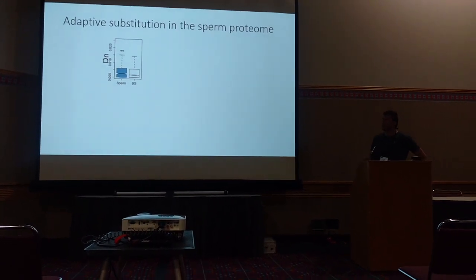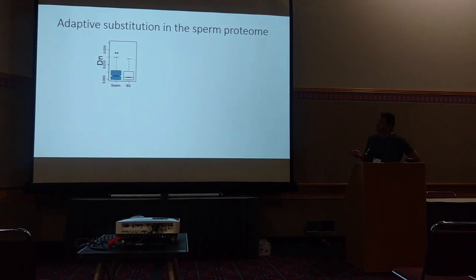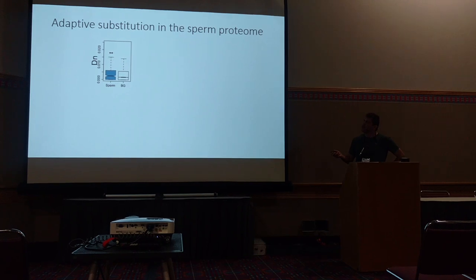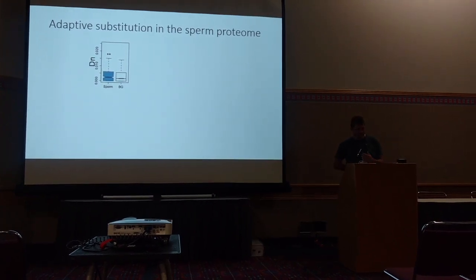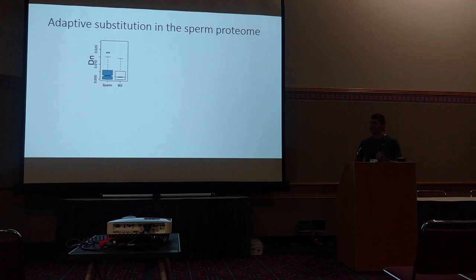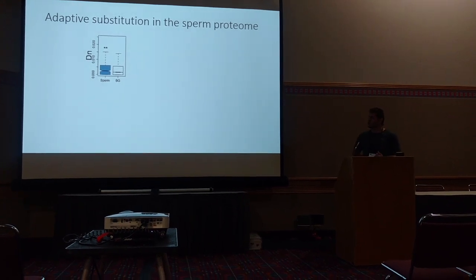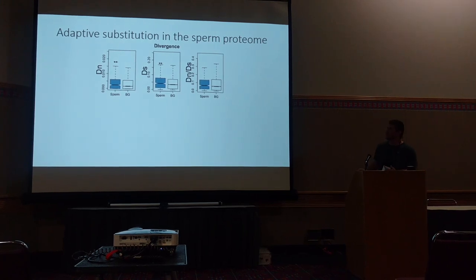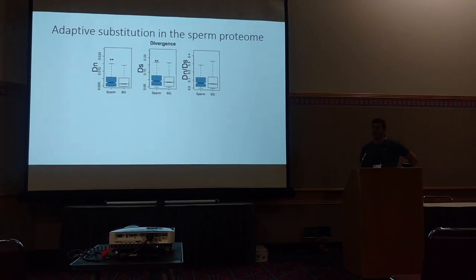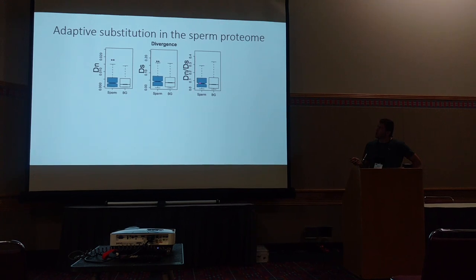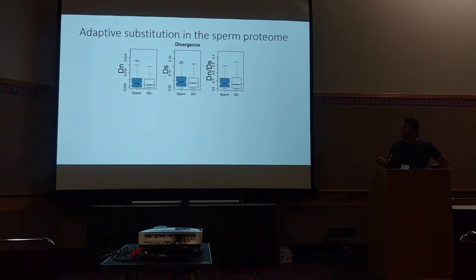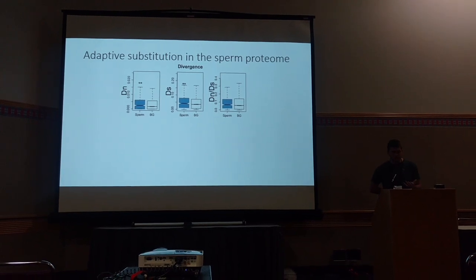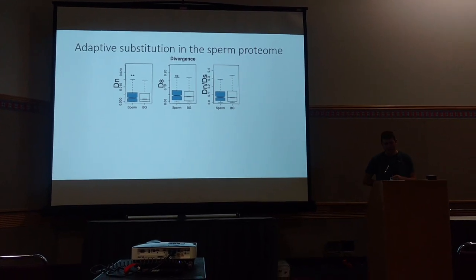We're going to start with the whole sperm proteome — that's the genes in blue here compared to the genome background in white. We do see off the bat an uptick in non-synonymous divergence, but that also coincides with an uptick in synonymous divergence in the sperm proteome compared to the genomic background, leading to a marginal, not statistically significant increase in dN/dS — just a bit of a trend for higher divergence.